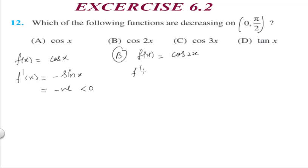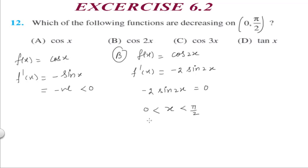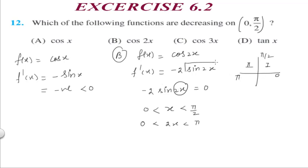Part (b): f(x) = cos(2x). Differentiating gives f'(x) = -2sin(2x). Since x ∈ (0, π/2), we have 2x ∈ (0, π), covering the first and second quadrants where sin is positive. Multiplied by -2, f'(x) < 0, so cos(2x) is also decreasing on (0, π/2). You can similarly check parts (c) and (d) of Question 12.